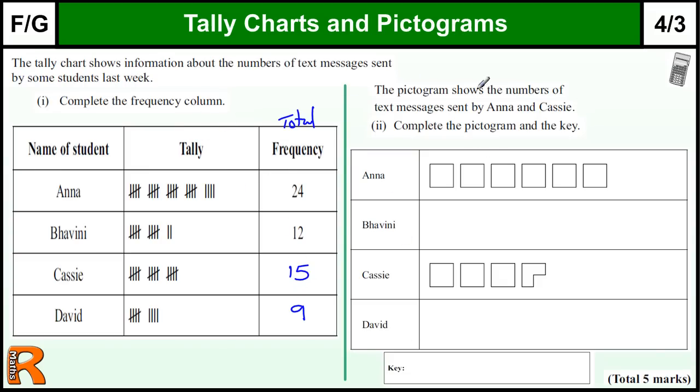Then we've got to draw the pictogram. So the pictogram is a picture representation of these bars. Now you might be thinking 1, 2, 3, 4, 5, 1, 2, 3, 4, 5, 6. These don't just represent the bars here. We need to think about this number 24 and the fact there's six of those there.